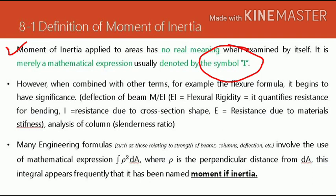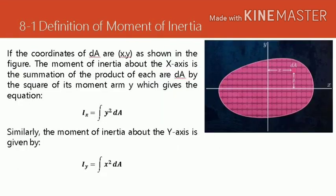Many engineering formulas involve the use of mathematical expression integral of rho squared dA, where rho is the perpendicular distance from dA. This integral appears frequently that it has been named moment of inertia. So that rho squared dA is where moment of inertia is derived. Later we'll show how those equations were obtained.